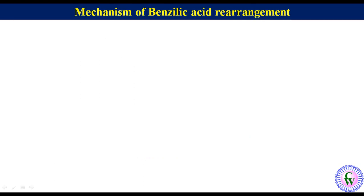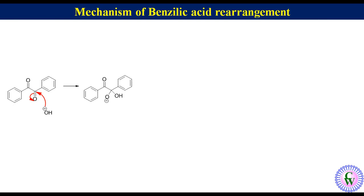Mechanism of benzylic acid rearrangement. Here we will take benzyl as a typical example for the mechanism. Hydroxide ion attacks on one of the two carbonyl groups to produce a tetrahedral intermediate, which undergoes 1,2-phenyl migration like this to produce a non-isolable species.